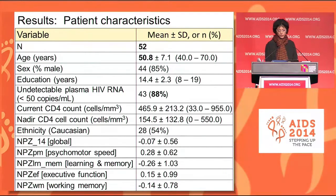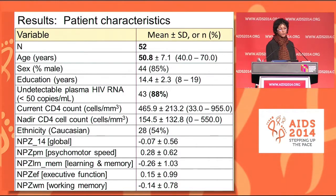We had 52 subjects, as I said before. The mean age was 51, and 88% of them had undetectable plasma viral load.